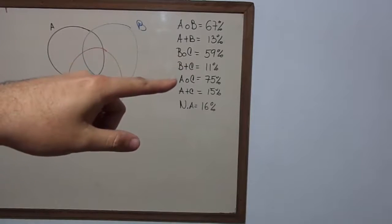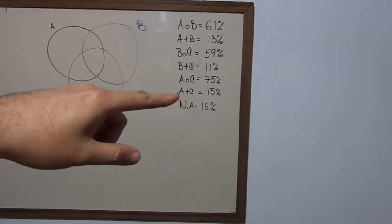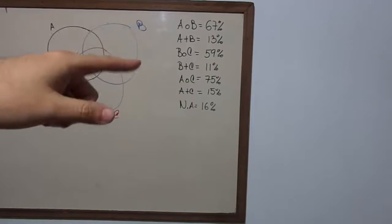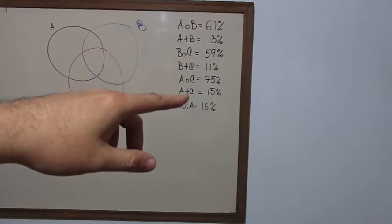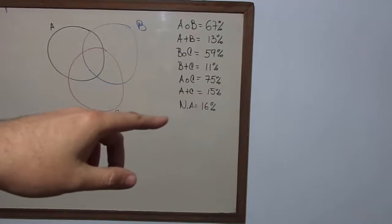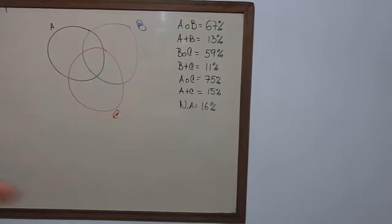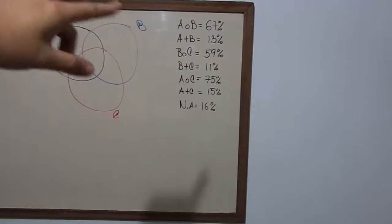were 11%. People who drink A or C were 75%. And the ones that drink both beverages, I mean A and C, like you can see here, were 15%. And none of the above were 16%. That gave us that the set you can see here on the screen,